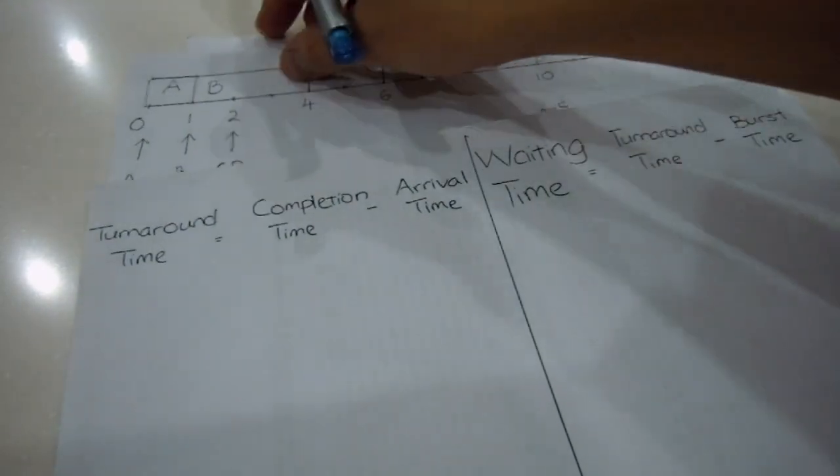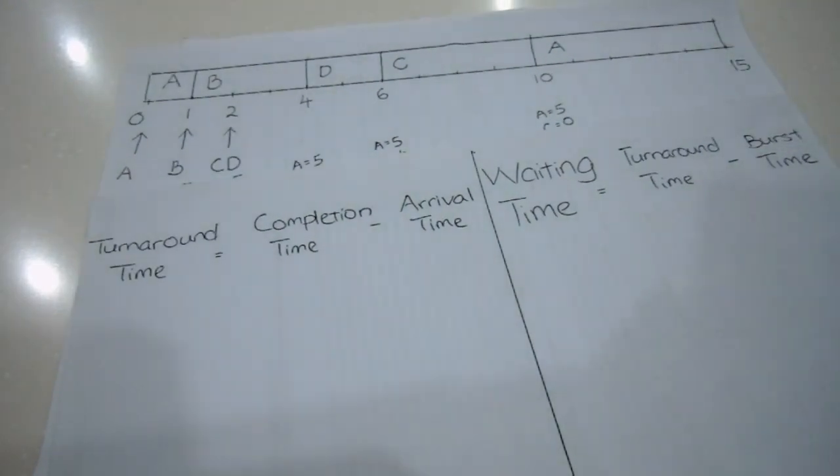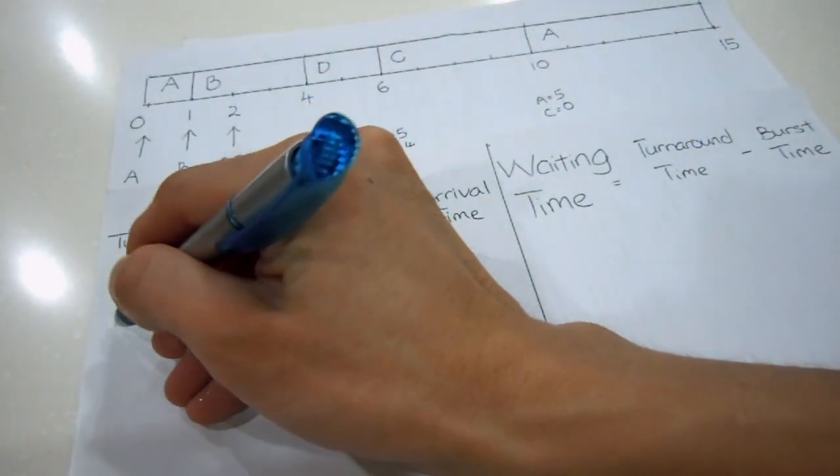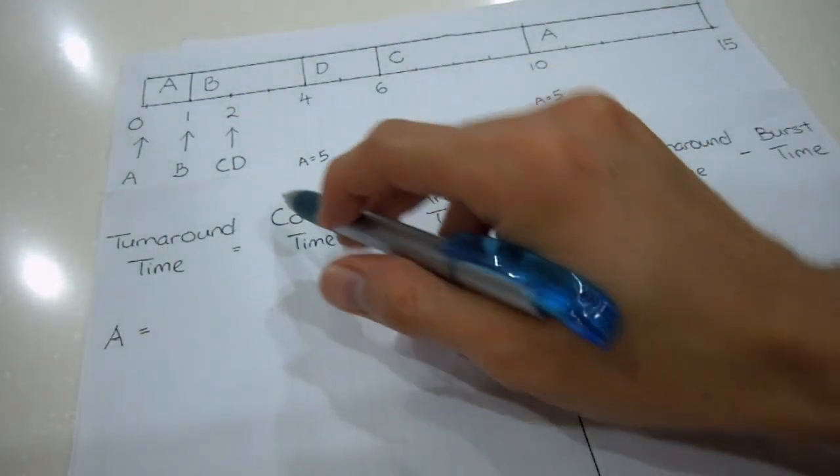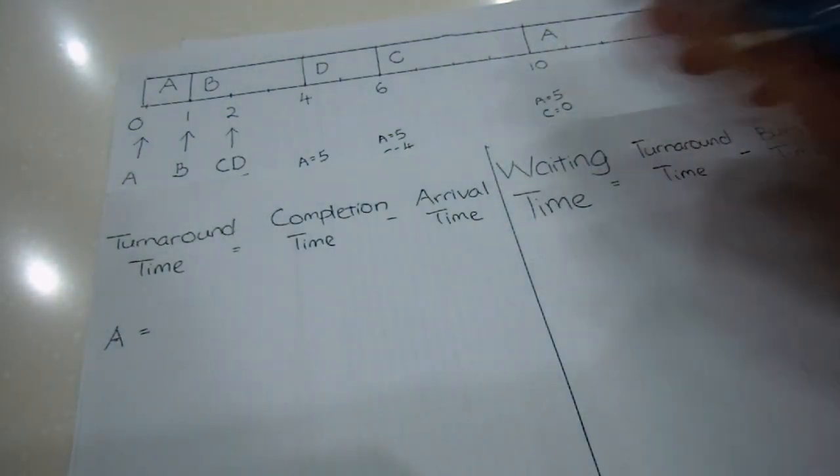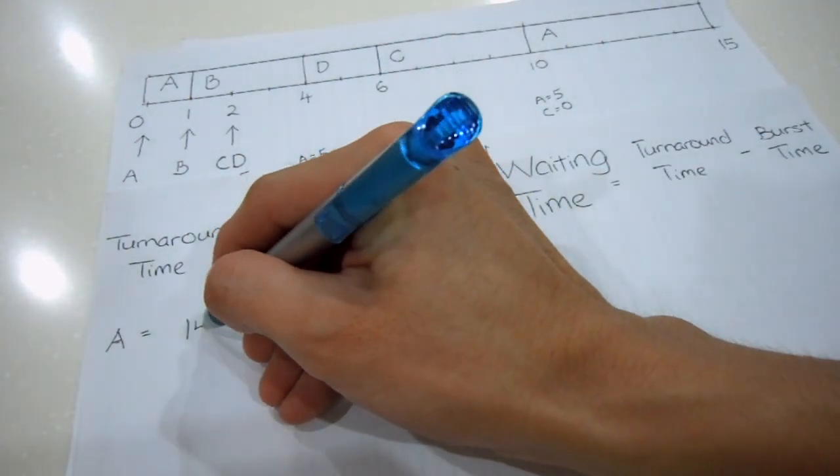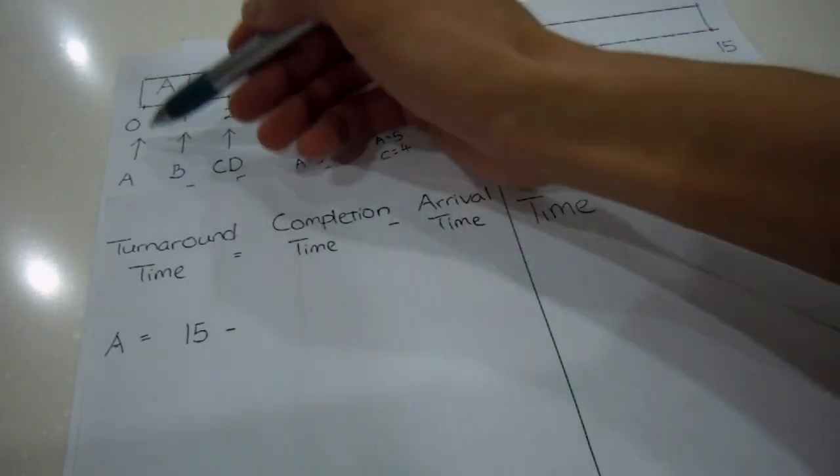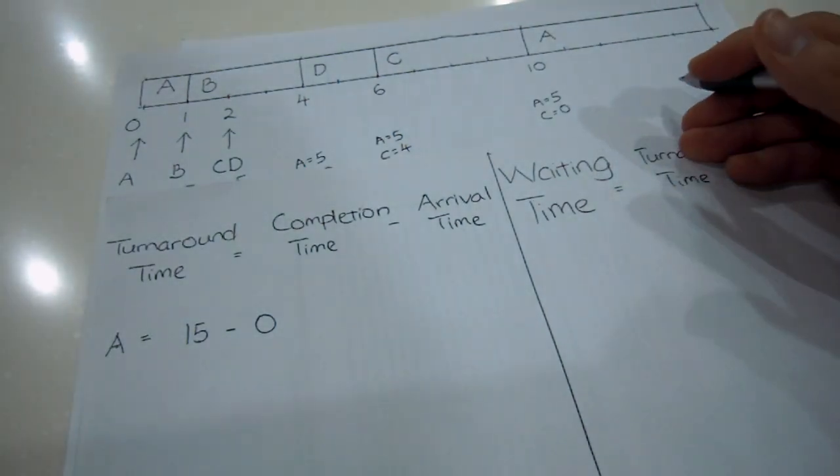We know that the turnaround time equals completion time minus the arrival time. Let's calculate the turnaround time for A. The completion time for A, in this case, is going to be 15 milliseconds. Although I have two parts here, the real completion time is at 15. So I have 15 here minus the arrival time. The arrival time here is 0 milliseconds.